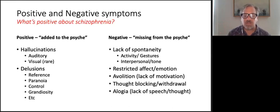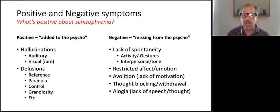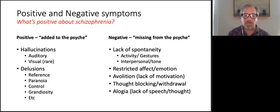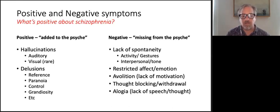Negative symptoms include things like the lack of spontaneity, or what we call avolition — a lack of motivation. People with schizophrenia often have very minimal facial expression; their voice is often very flat, and it's hard to tell what they're feeling. As such, people with schizophrenia are often very withdrawn, staying in their room the vast majority of the day. Thought blocking is where a thought stops mid-sentence and isn't picked back up. The term alogia describes that lack of speech or thought — sometimes called paucity or poverty of thought.